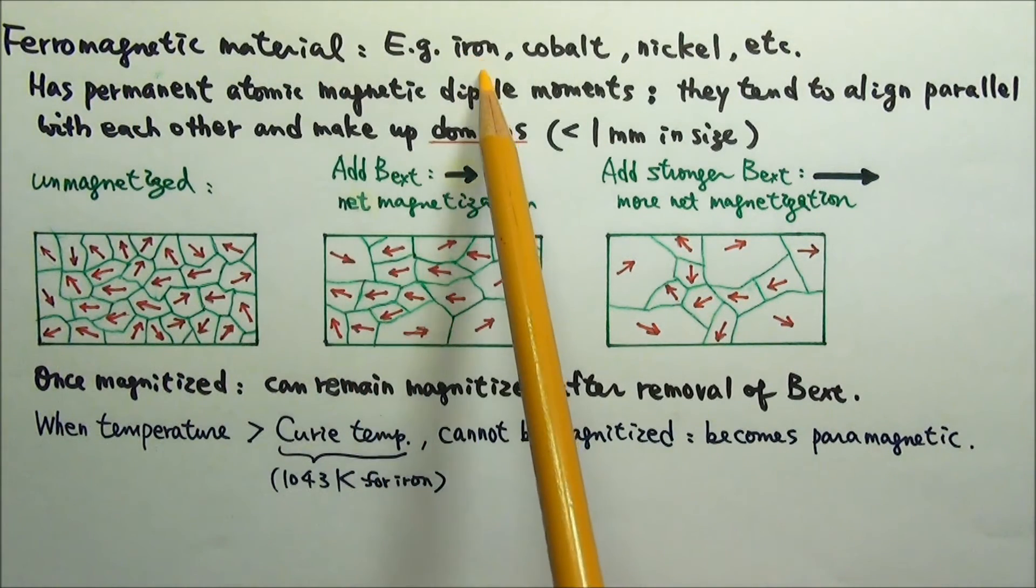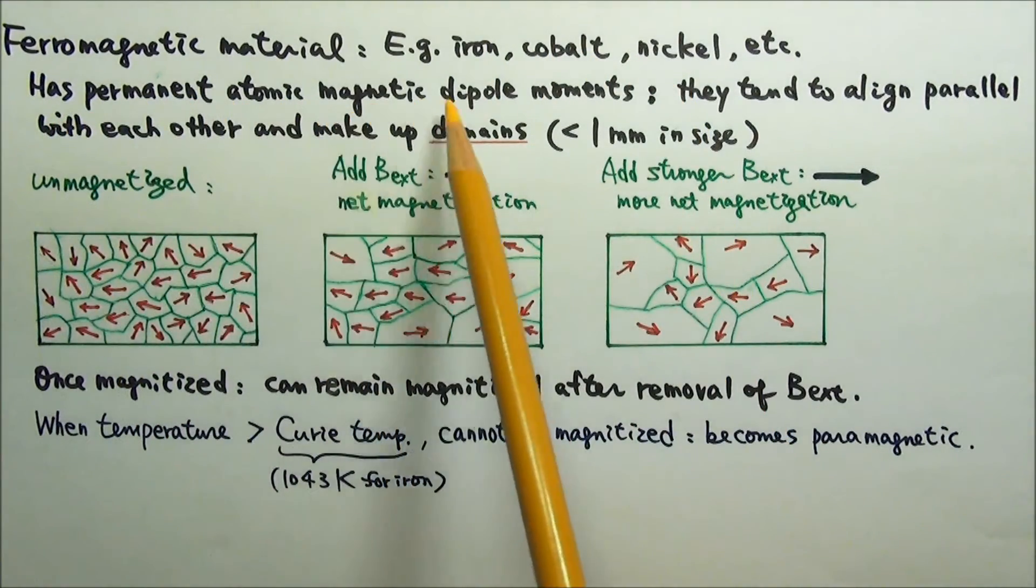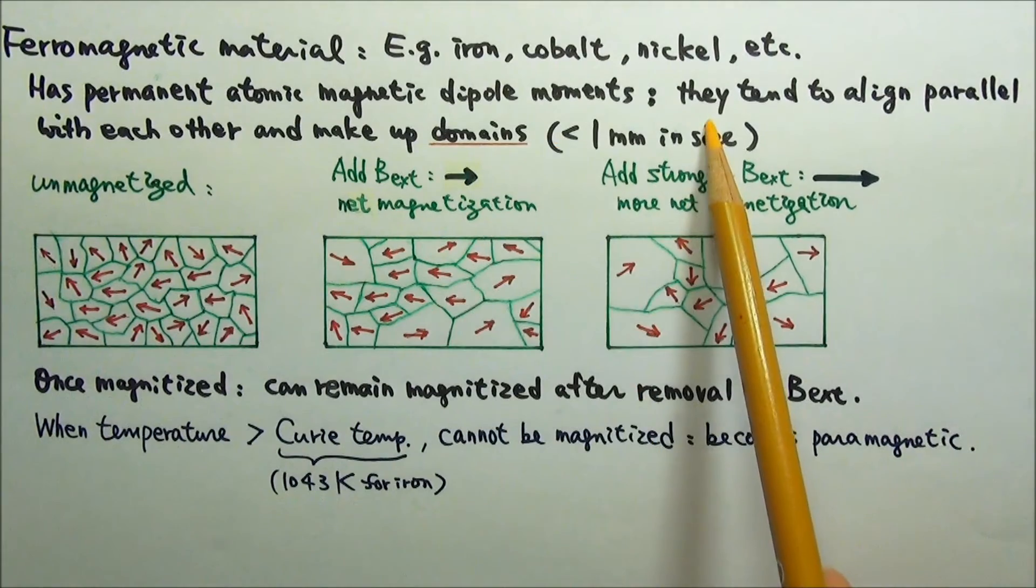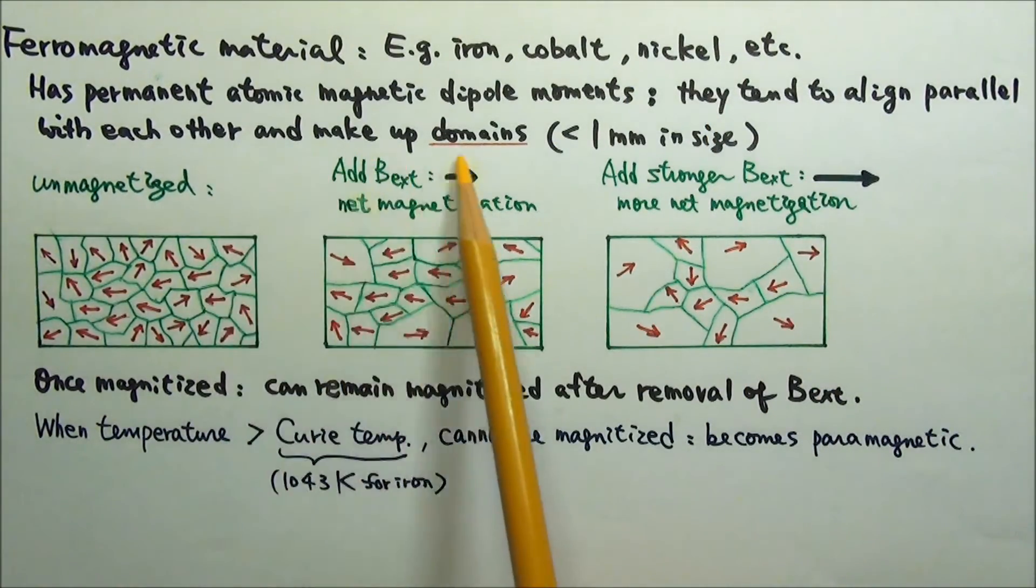Ferromagnetic material such as iron, cobalt, and nickel contains permanent atomic magnetic dipole moments. Their atomic magnetic moments tend to align parallel with each other and make up domains.